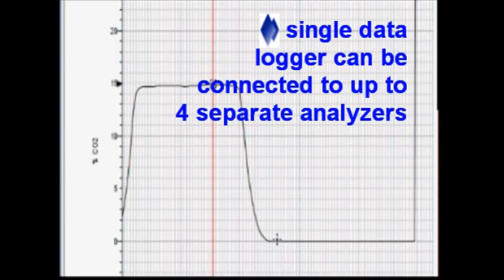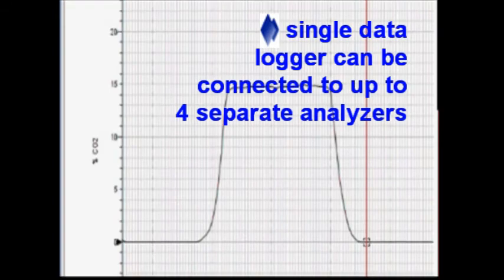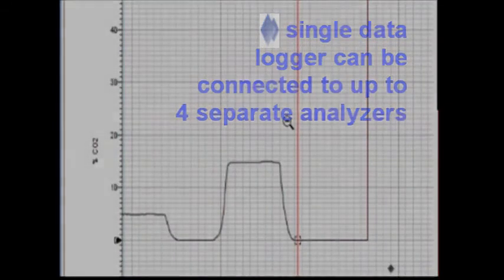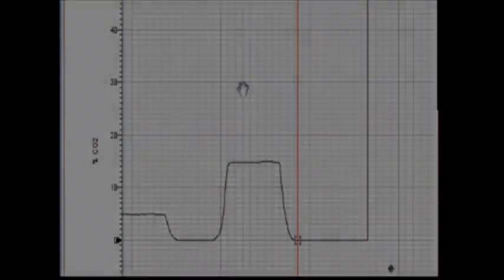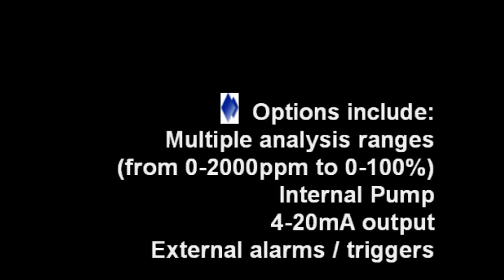It's a four-channel data logger, so it could be connected theoretically to four analyzers, or it could be connected to our 902P analyzer and record the O2 and CO2 concentrations simultaneously from the voltage output. Thanks for watching our Model 906 CO2 analyzer demonstration.